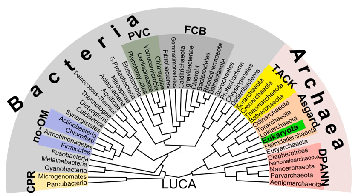Prokaryotes have a prokaryotic cytoskeleton, albeit more primitive than that of the eukaryotes. Besides homologues of actin and tubulin, the helically arranged building block of the flagellum — flagellin — is one of the most significant cytoskeletal proteins of bacteria, as it provides the structural basis of chemotaxis, the basic cell physiological response of bacteria.